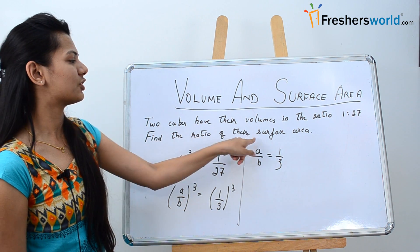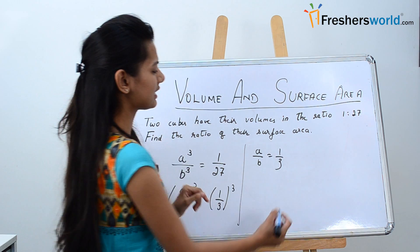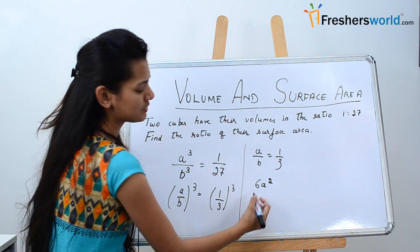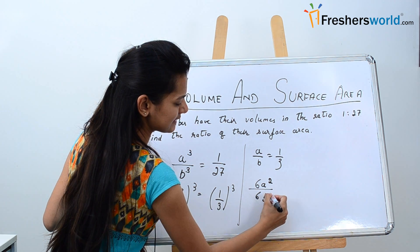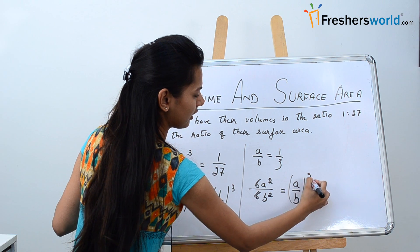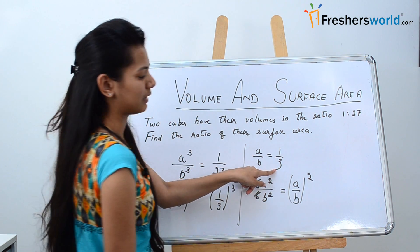Now they have asked us to find the ratio of the surface area. Surface area of a cube is 6a squared. So for the two cubes, the ratio would be 6a squared by 6b squared. Now that means it is a by b the whole squared. We have already found out the ratio a by b.